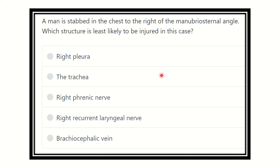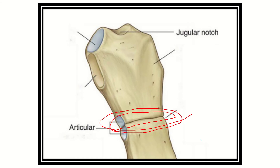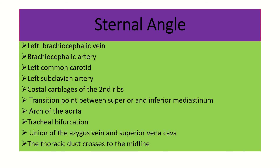We have to find out which of the options is not located at the manubriosternal joint and will not be injured in this condition. Here we can see this junction — this is the manubriosternal joint. We have to find out the structure which is located at this angle.